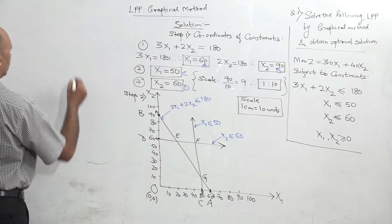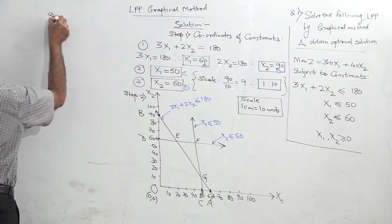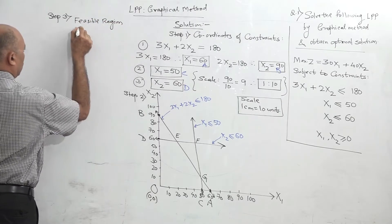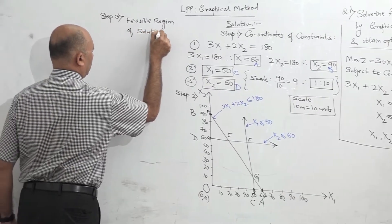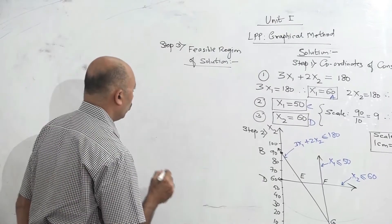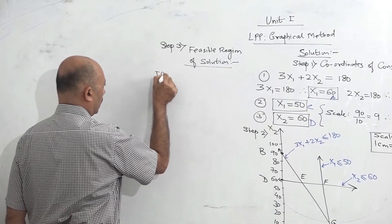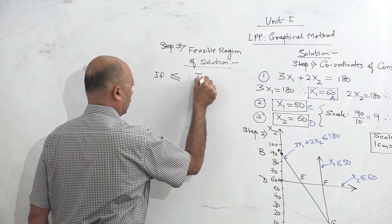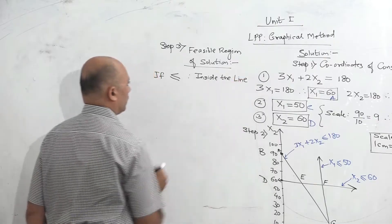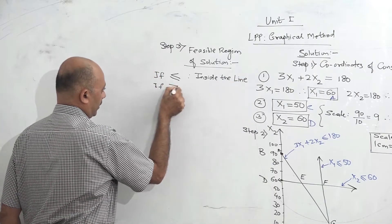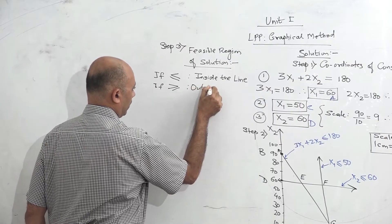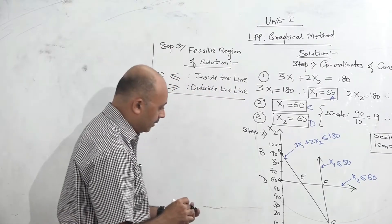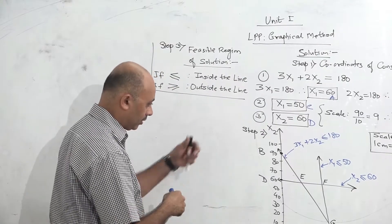Now the next step is step three: find the feasible region, that is the feasible region of solution. It means where exactly is our solution on the graph? The rule for finding this solution is: if the constraint is a less than or equal to constraint, the region should be inside the line. And if the constraint is a greater than or equal to constraint, the region will be outside the line.